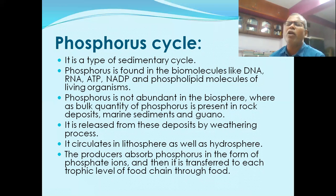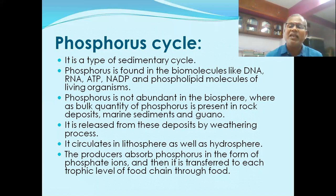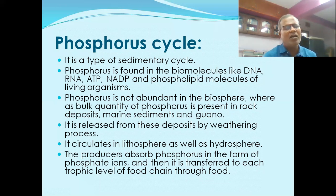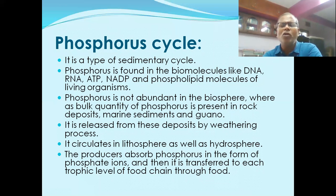Plants absorb phosphorus from the soil. The phosphorus then moves through the food chain — from plant to primary consumer, to secondary consumer, to tertiary consumer. Following the food chain, chemicals including phosphorus are transferred through each level, from plants through herbivores up to carnivores.